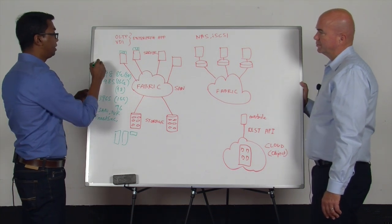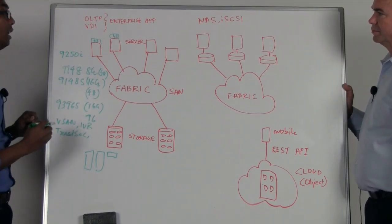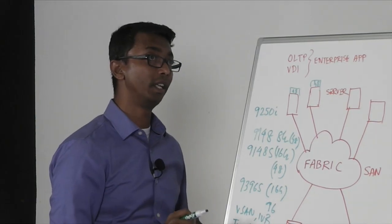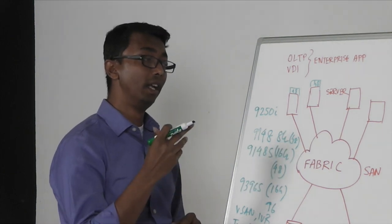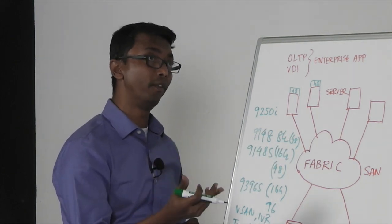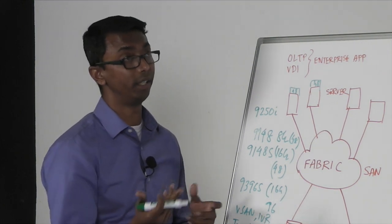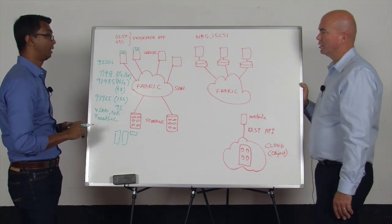We have another switch I just want to touch upon that people already know about. It is 9250i. This is a backup disaster recovery type of switch, classical example of that. So it has 20 fiber channel ports, then it has IP ports for FCIP, and then it has FCOE, fiber channel over Ethernet, where Cisco is the major player. A SAN extension type of thing, exactly.